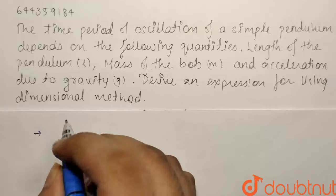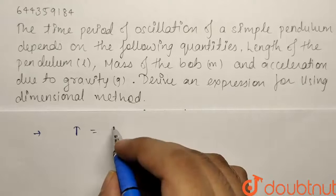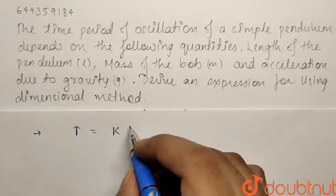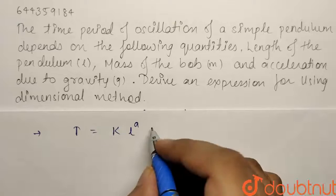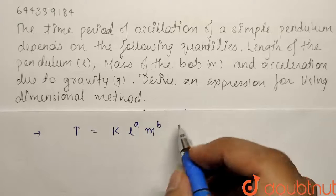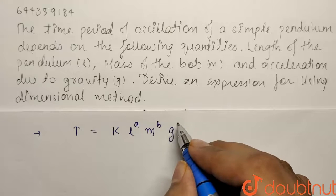So as the time period T is dependent upon all these quantities we can write it will be equals to k, a constant, into L to the power a, into second quantity mass to the power b, and the third quantity acceleration due to gravity g to the power c.